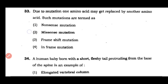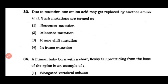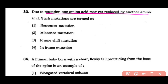Question number 33: Due to mutation, one amino acid may get replaced by any other amino acid. Such mutations are termed as: nonsense mutation, missense mutation, frameshift mutation, or in-frame mutation. The answer is option 2 — missense mutation, where one amino acid in the cell is replaced by any other amino acid.